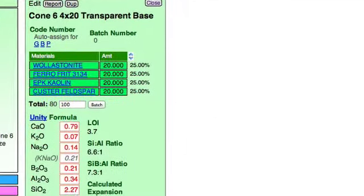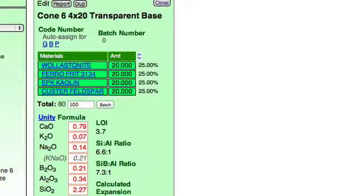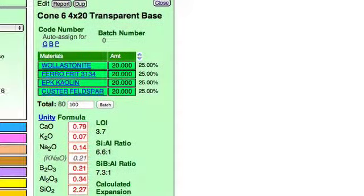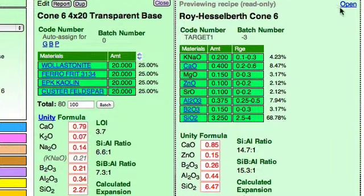I'll click open. Now I want to compare this with a cone 6 limit formula. To find that limit formula, I'll click advanced search and go to batch number negative 3, click search, and in group 2 here I'll pick this one and then choose open.